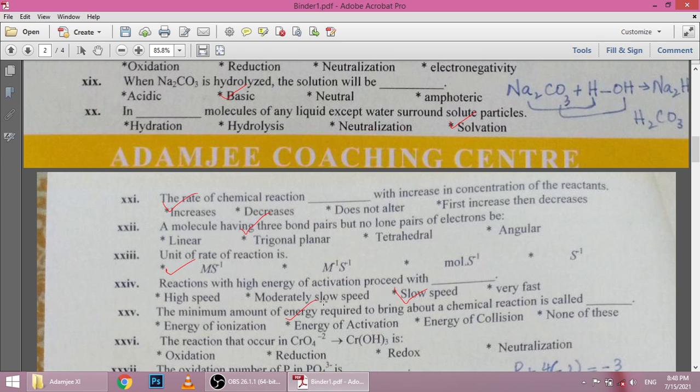The reaction that occurs with CrO4²⁻. Here chromium oxidation state is plus 3, but here is more than that, here is plus 6. The balance is reduced here.